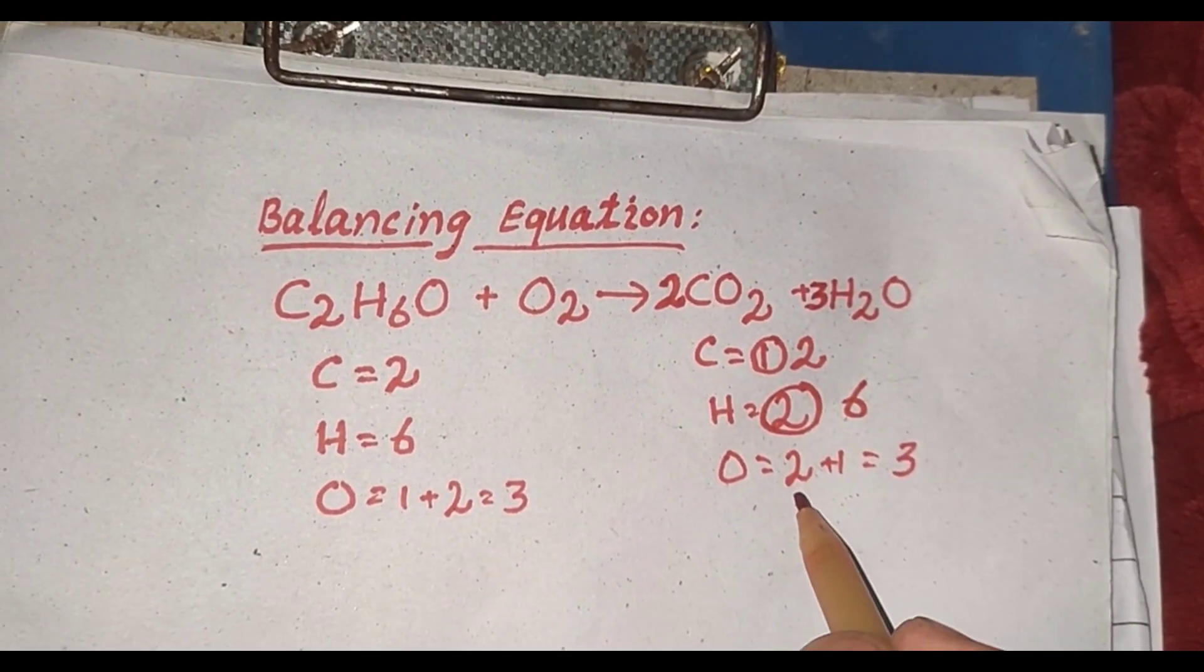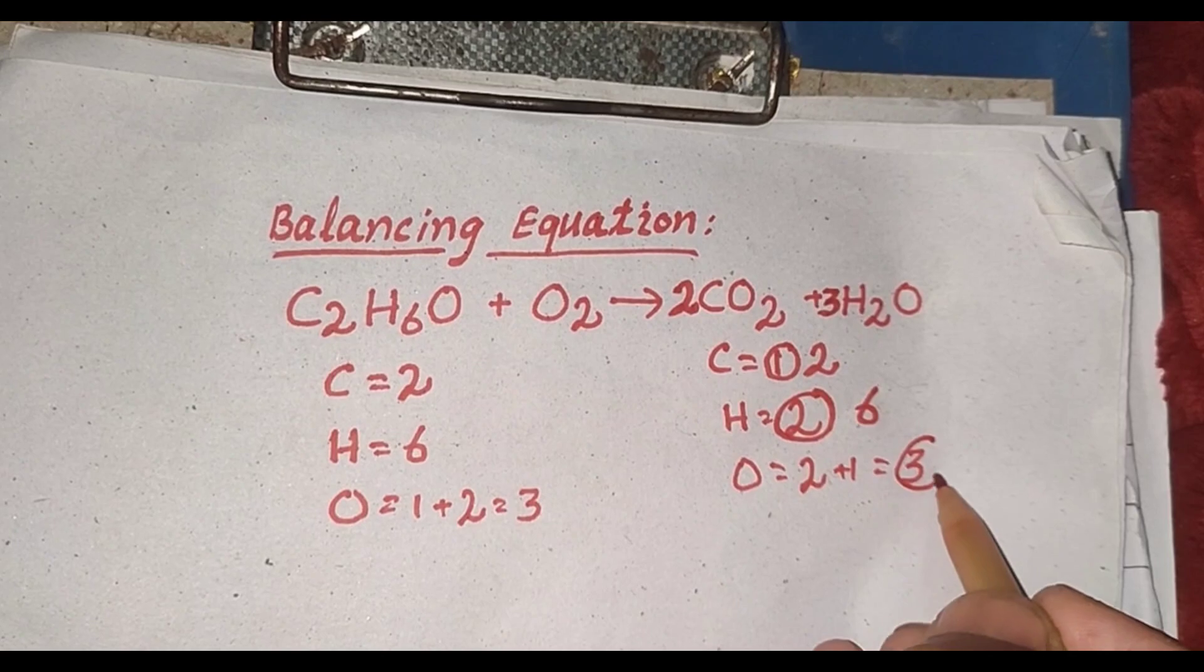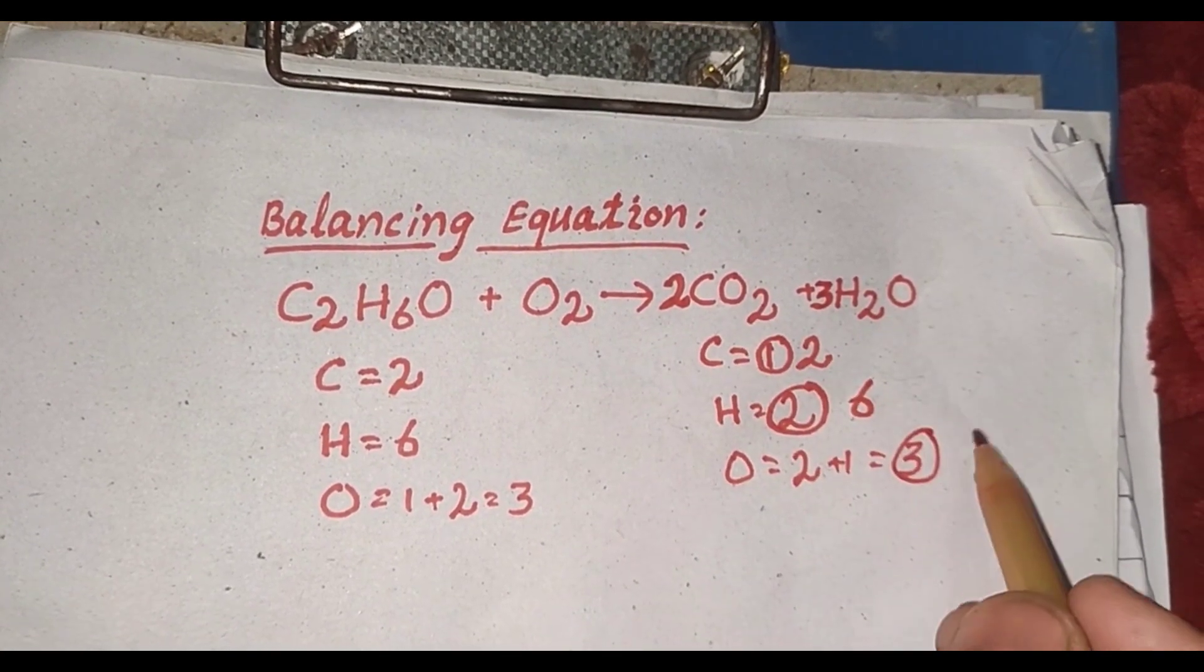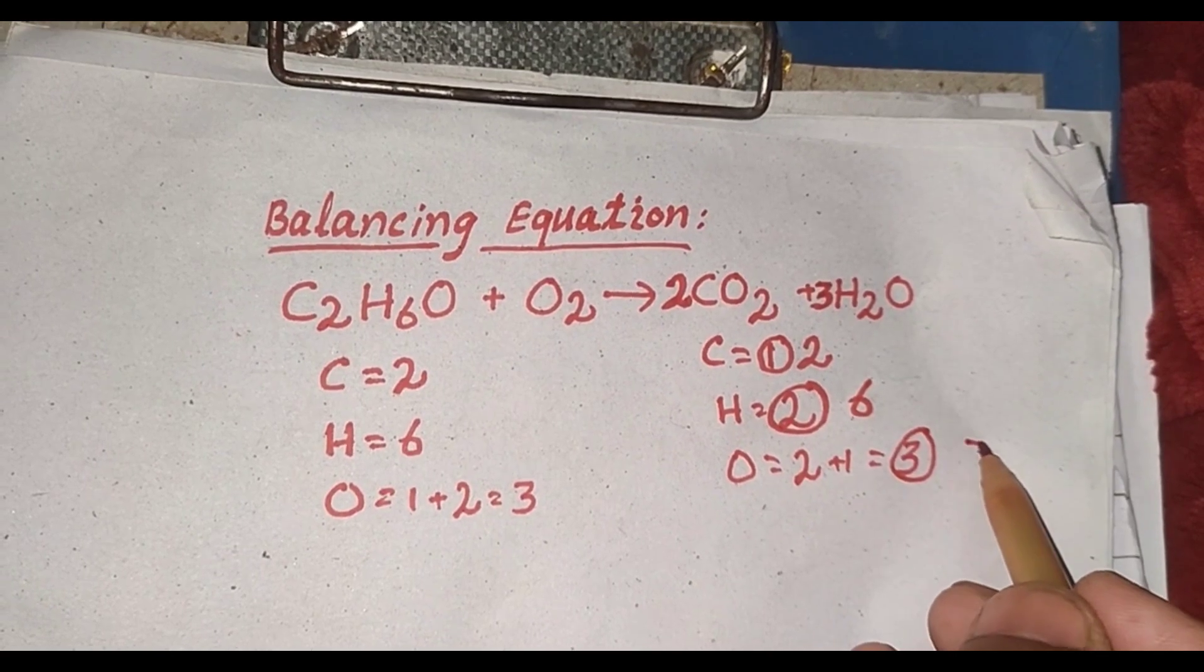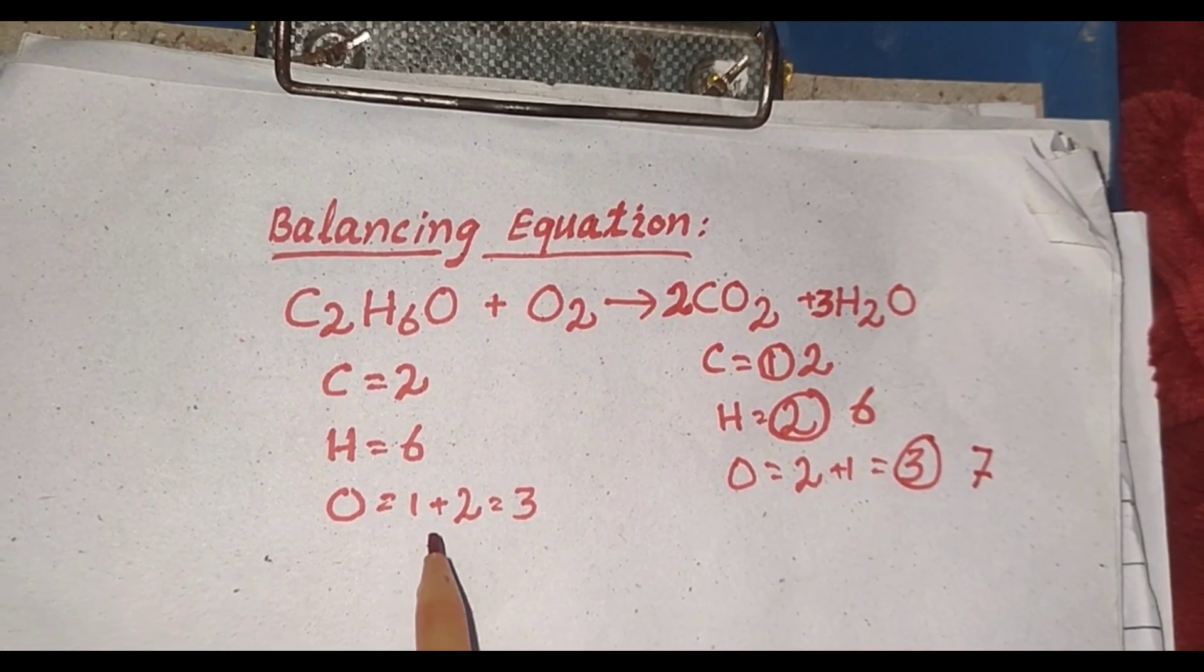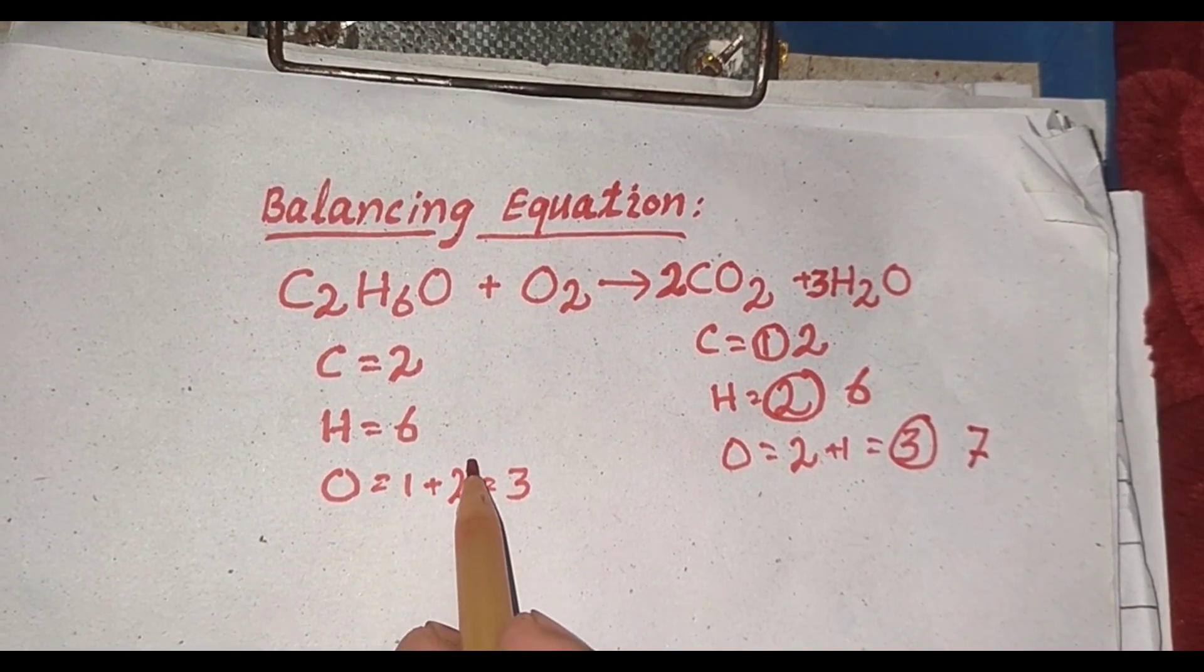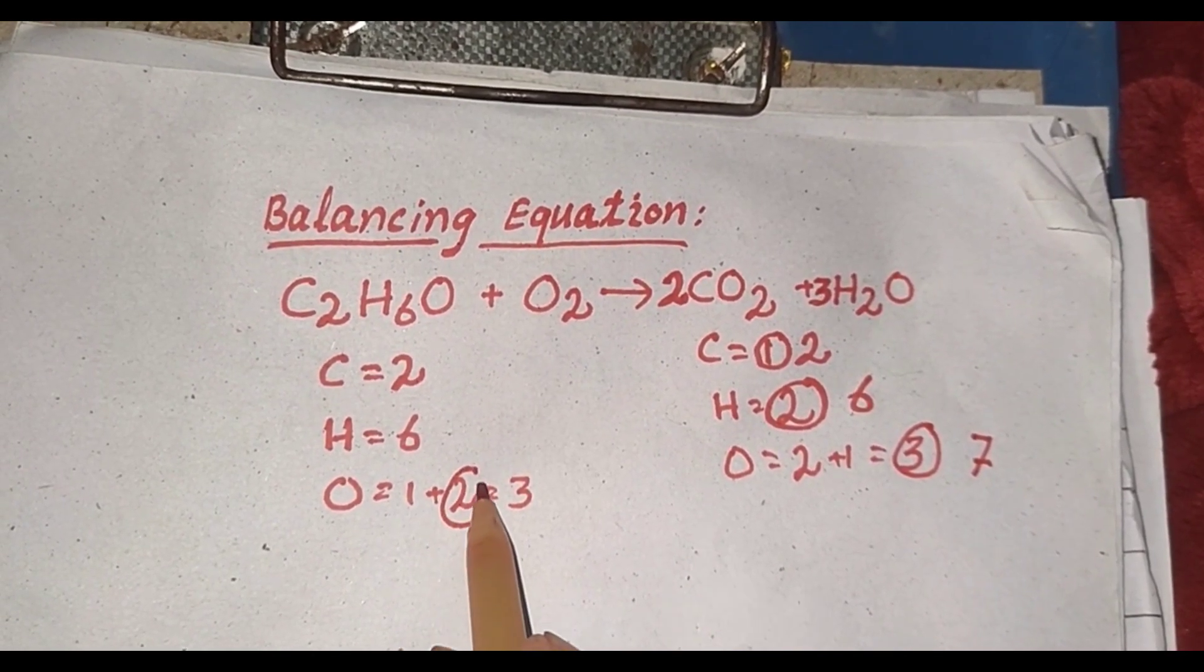We count the oxygen atoms again. There are 4 oxygen atoms here and 3 oxygen atoms here, total 7 oxygen. On the left there are 3 oxygen. If we multiply by 3, that gives us enough oxygen.